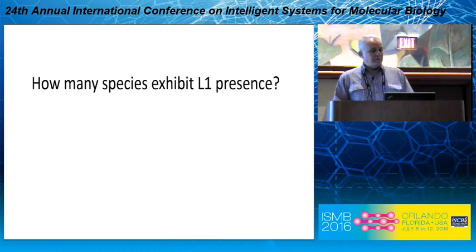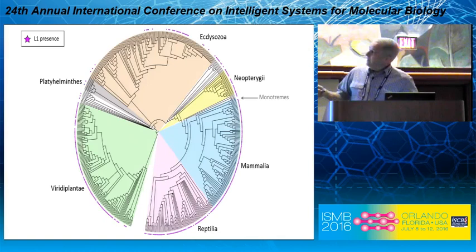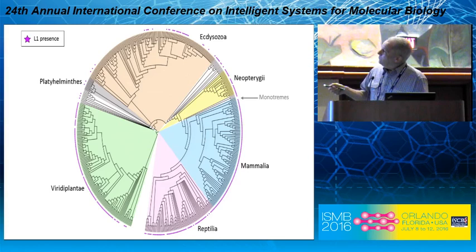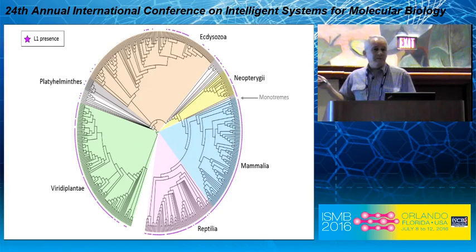Once we had done that, how many of those species showed L1s? Those little purple stars scattered around the outside are where we found some evidence of L1s — either full-length or fragmented sequences. There are some parts of the tree of life that are pretty sparse in terms of content, but otherwise L1s are pretty much everywhere we looked. However, there are some species that lack them. All mammals except for monotremes contain L1s — we couldn't even find any fragments of L1s in monotremes, which is something I might save for a future talk.